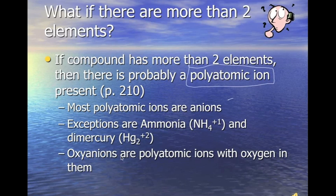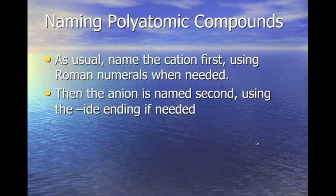Oxyanions are polyatomic ions that contain oxygen. When naming polyatomic compounds, we name the cation first — the metal — and if it's D-block, we put the Roman numeral. The anion is named second, using the -ide ending if needed, though polyatomic ions usually come with their own endings.